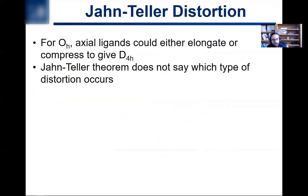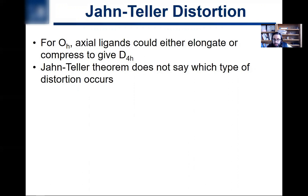In practice for octahedral complexes, the simplest type of Jahn-Teller distortion involves taking the axial ligands and either elongating or compressing them. In either case, the point group goes down from Oh to D4H, because you no longer have multiple C4 axes — only one C4 going through those axial ligands. The Jahn-Teller theorem doesn't tell you whether elongation or compression will occur; it just tells you whether some distortion is going to occur.